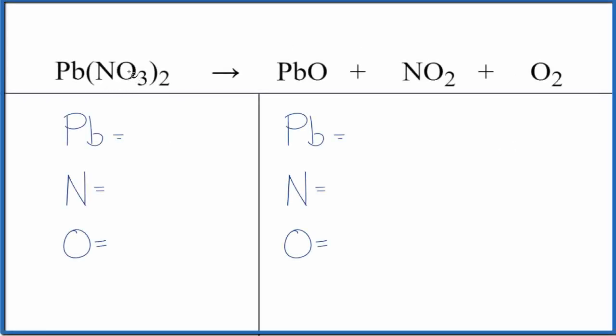Let's balance the equation for the decomposition of Pb(NO3)2. This is lead 2 nitrate and it's decomposing into these products here. We'll also look at the type of reaction and write the states.